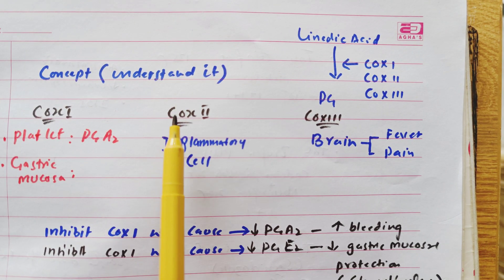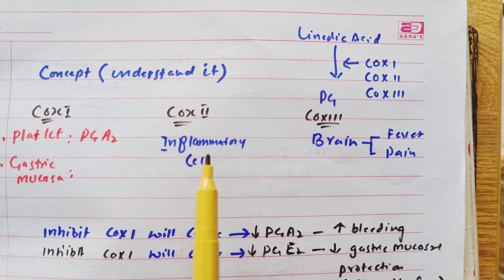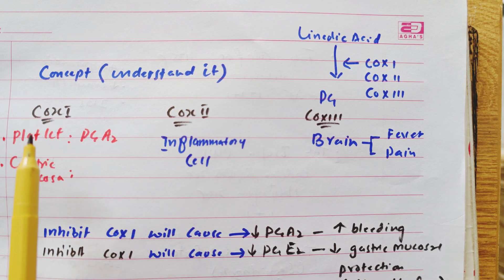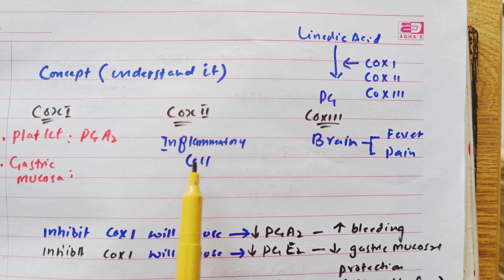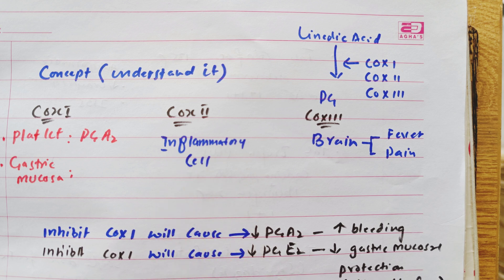That's why the selective COX-2 inhibitors are very good because we are not going to affect the platelet function and we are not going to decrease the gastric mucosal protection.